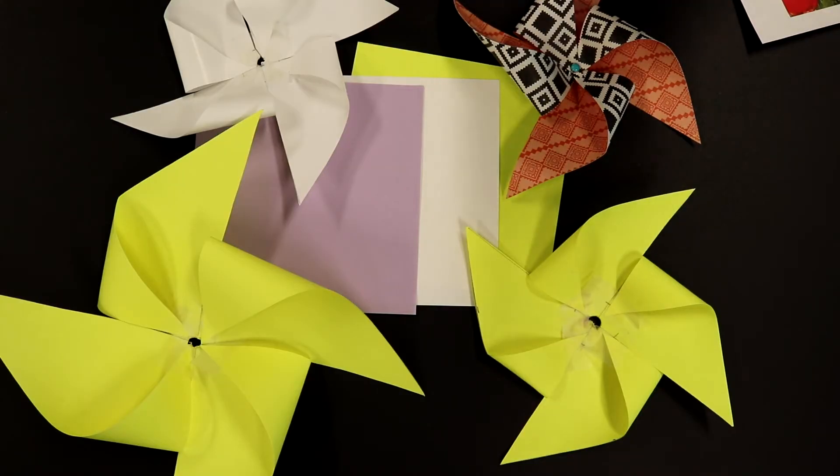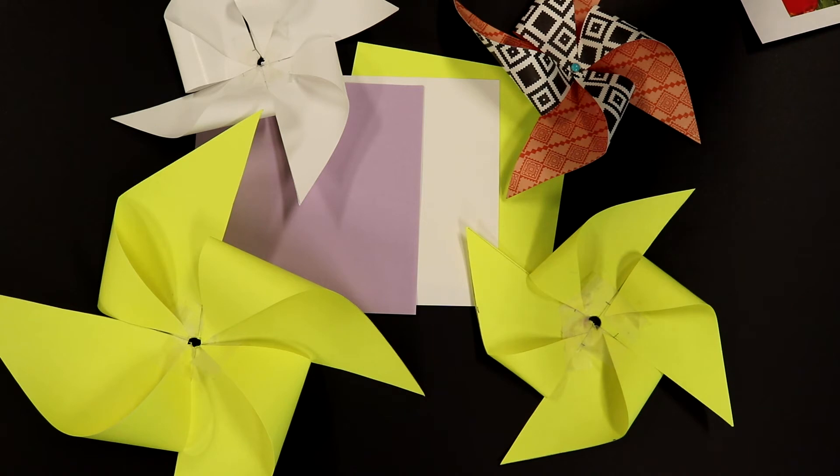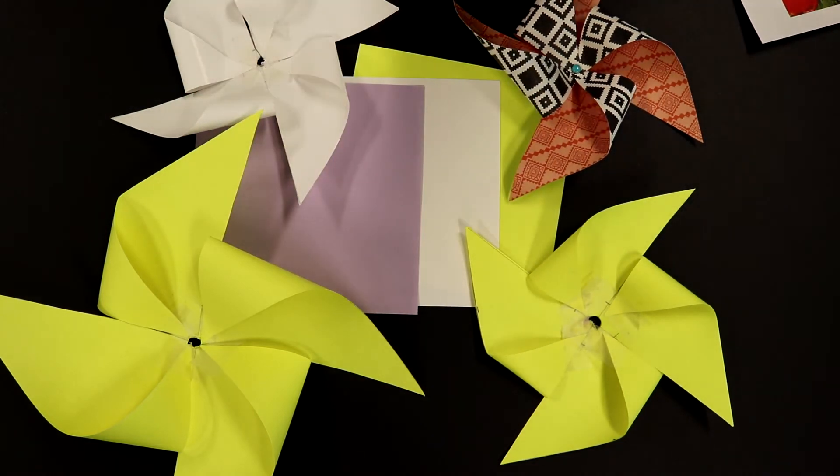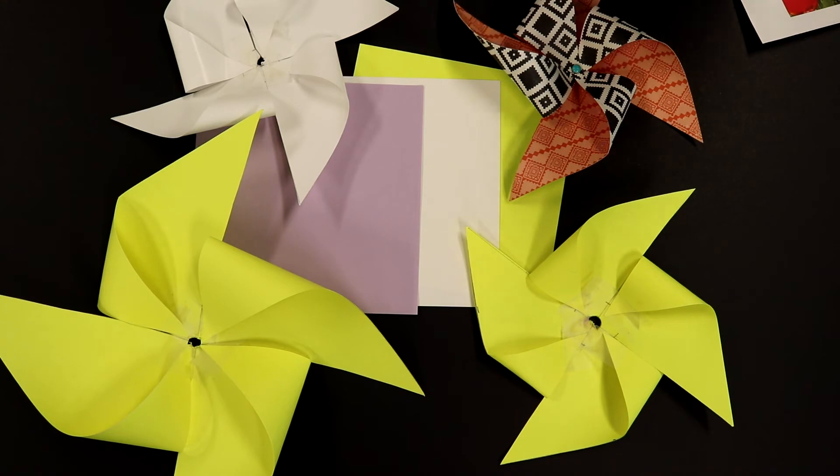So how do you make this into an experiment? After you've made one model windmill, make models with the other pieces of paper. You've got the three different kinds. Which kind of paper works best, and why do you think it does?